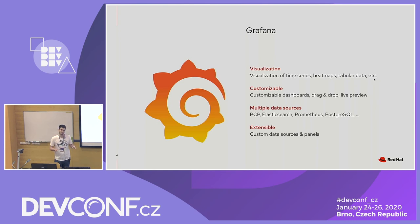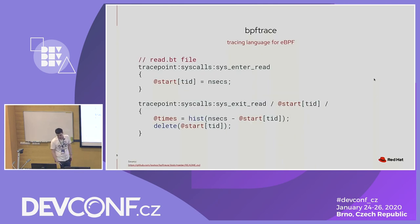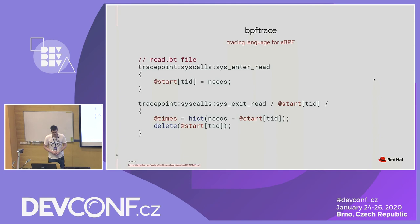For example, you have one panel with BPFtrace data and another panel showing data from PCP — for example, CPU usage — or data from Prometheus, or anything else. And BPFtrace — we just had a great introduction to BPFtrace, so I'll keep it a bit short.